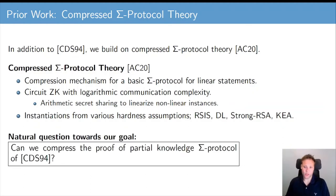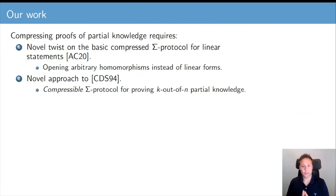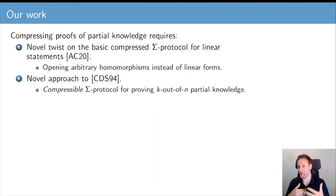Given compressed sigma protocol theory, a natural question is whether we can compress the proof of partial knowledge sigma protocol of CDS-94 to reduce communication complexity from linear down to logarithmic. In our work, we basically show that yes, we can do that — we can compress the CDS-94 proof of partial knowledge approach. However, it does require some adaptations and twists to the original protocols. First, we need to develop a novel twist on the basic compressed sigma protocol for proving linear statements from AC-20.